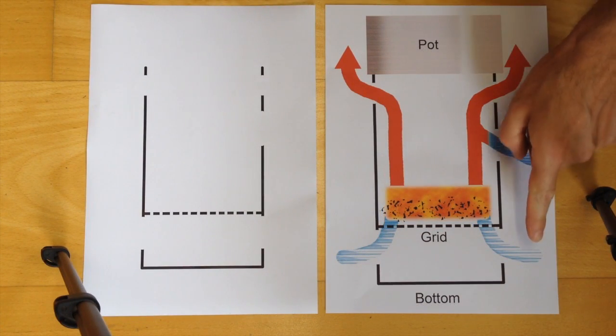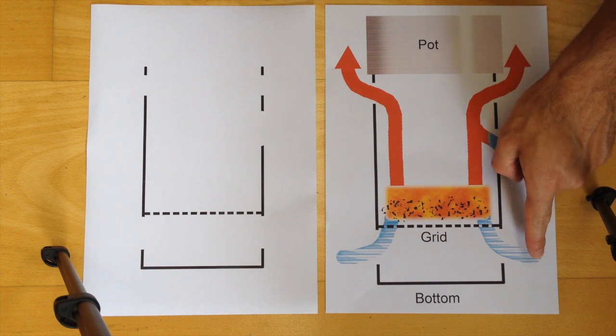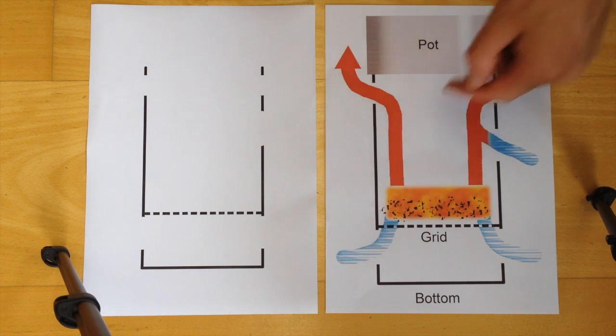I see lots of stoves that have for the air intake here some really tiny holes. Some people just drill three holes there and expect to have a nice fire. Folks, fire needs air and the rough thing is the more air the more fire you will have.